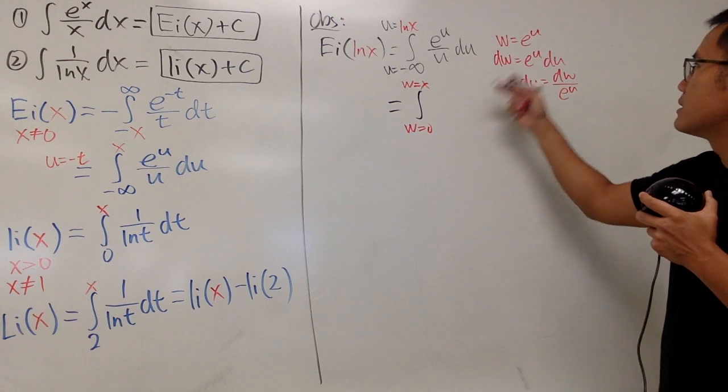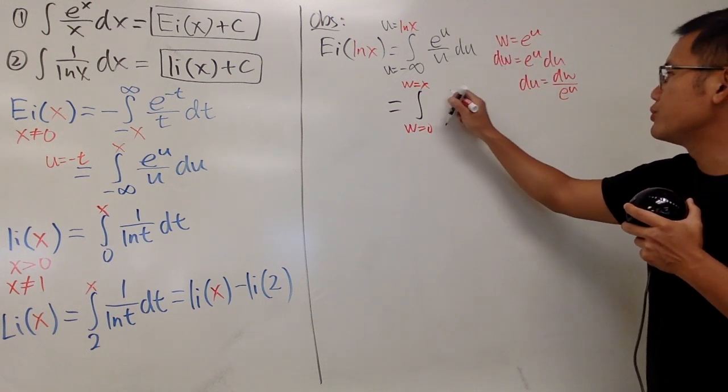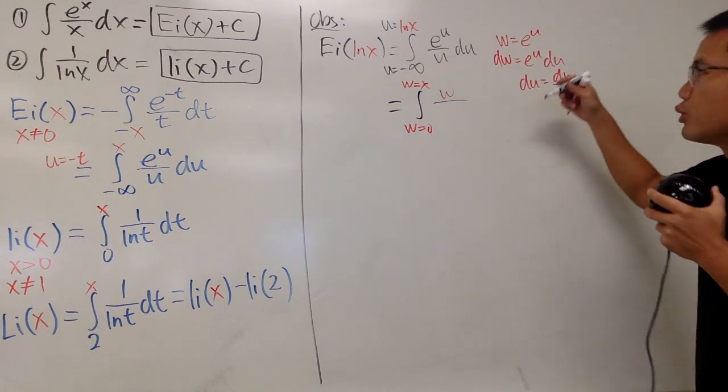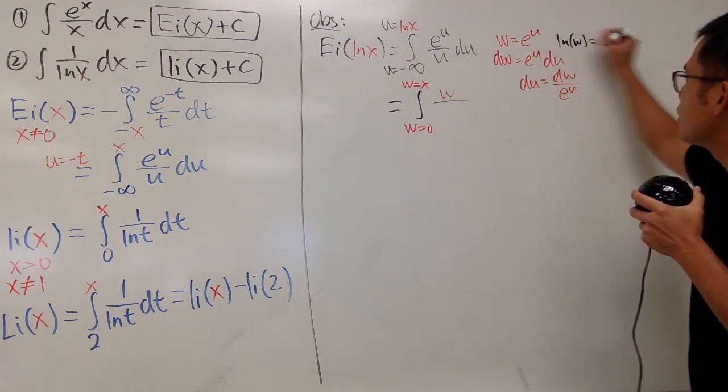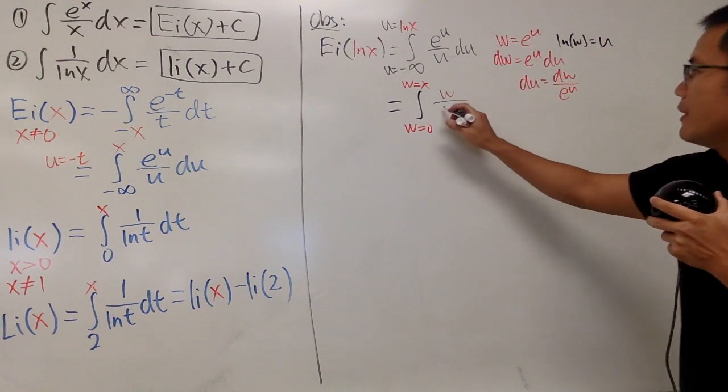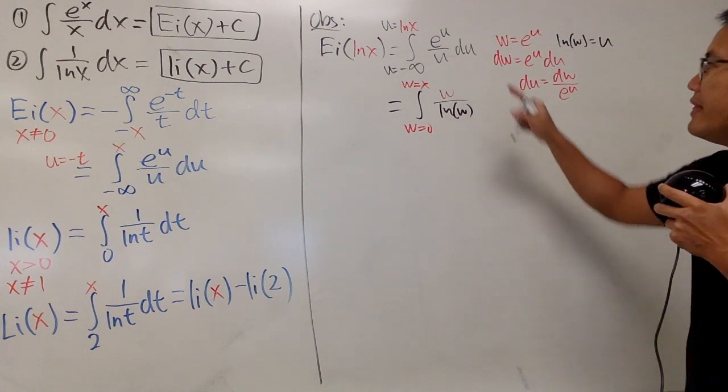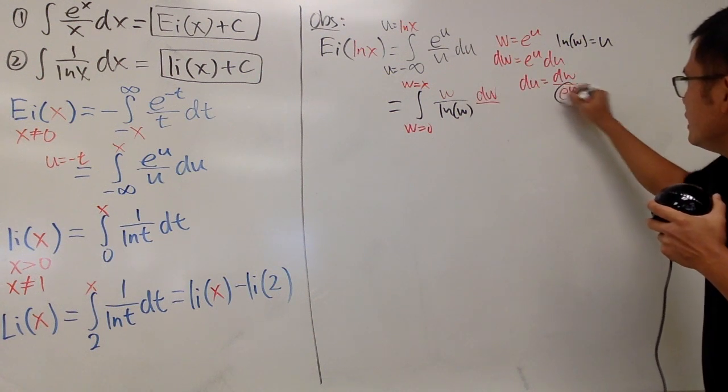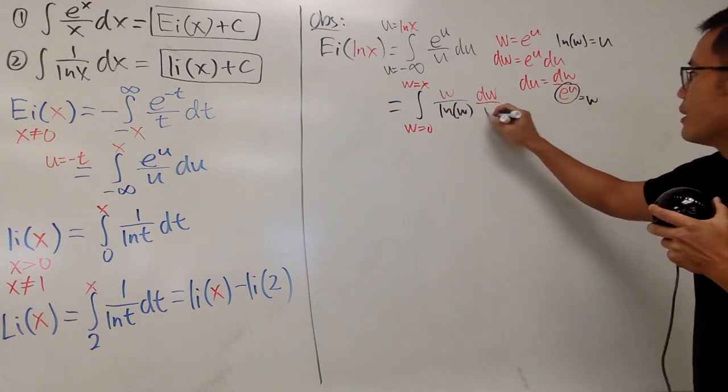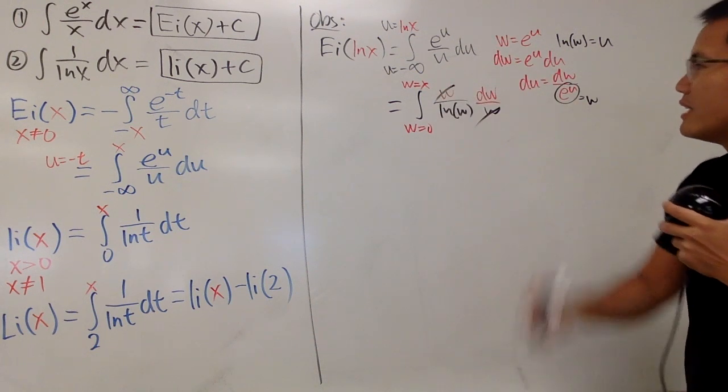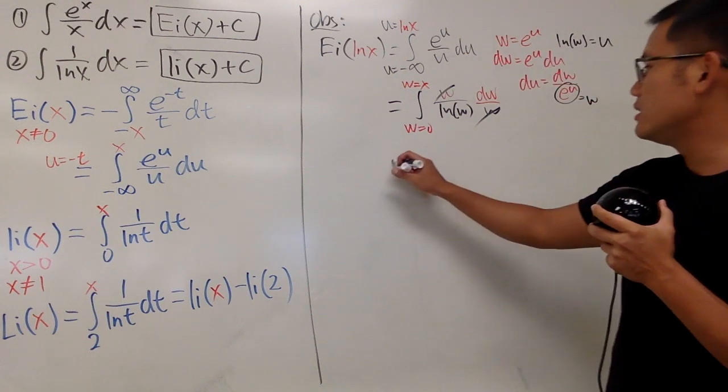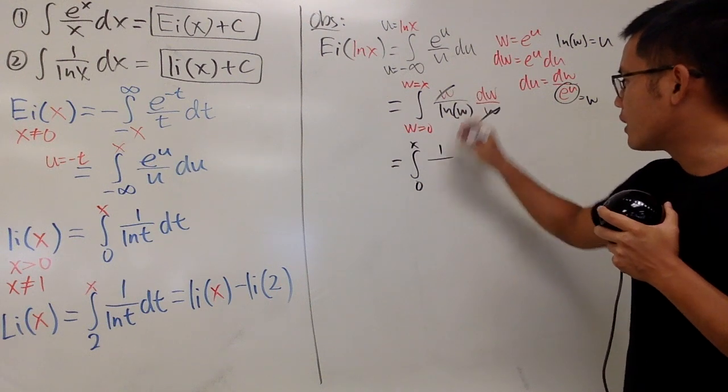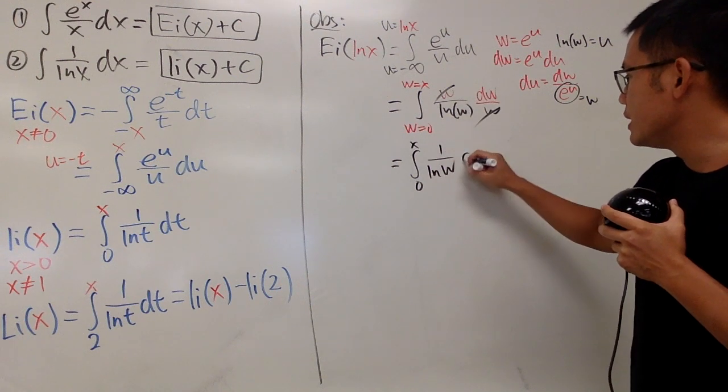And now, e^u, let me just substitute w. So this is w over u. Let's just take a natural log on both sides, so we get ln(w) equals u. So we have ln(w) right here. And then du is dw over e^u, which is the same as w, so I can put the w right here. But the deal is this and that cancel each other out. As you can see, this right here is nicely equal to the integral going from 0 to x, and here we have 1 over ln(w) dw.